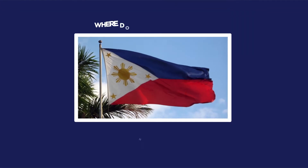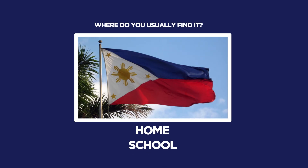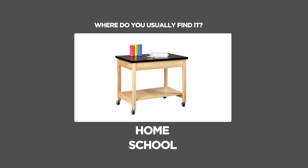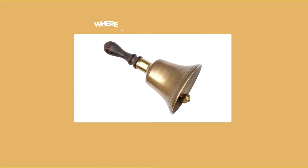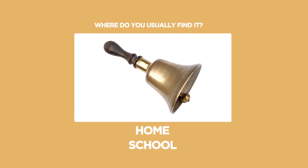Fourth is flag. Where do we usually find it? Very good! It is usually found in school. Fifth is demonstration table. Where do we usually find it? That is right! It is usually found in school. Next is bell. Where do we usually find it? Correct! It is usually found in school. Alright! Now that we already know what are the things that we may usually find, whether at home or at school, it is very important to know if they are useful or if they are harmful.